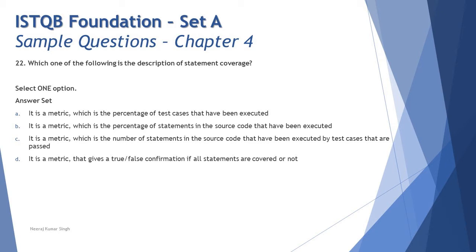That gives the percentage of statements in the source code which are covered by the test cases. So option A is partially correct, but it does not have that crucial definition part. Coming to option B: it is a metric which is the percentage of statements in the source code that have been executed. That is completely correct — we're talking about the percentage of statements covered in the source code that have been executed.